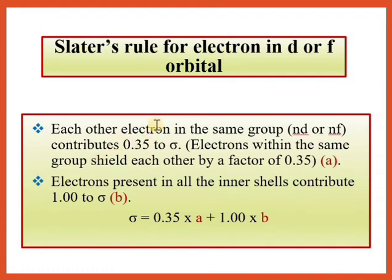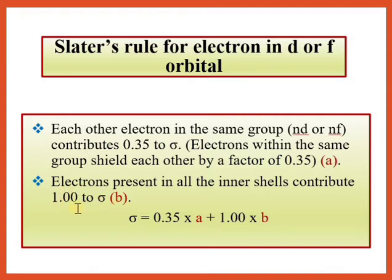For electrons present in d or f orbitals, the calculation is slightly different. If an electron is in nd or nf, exclude one electron; the remaining electrons in the same nd/nf group each contribute 0.35 to sigma. All remaining inner orbital electrons — there is no (n−1) subdivision here — contribute 1.0 each. So: σ = 0.35a + 1.0c.